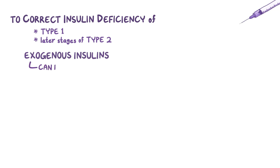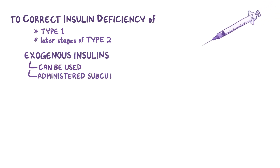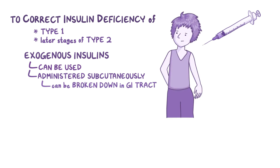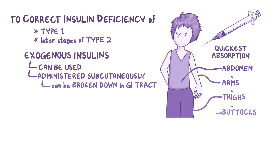In order to correct the insulin deficiency found in type 1 diabetes and later stages of type 2 diabetes, exogenous insulins can be used. Insulin is administered subcutaneously because they can be broken down in the GI tract. Insulin is typically administered through syringes or insulin pens. When injected into the abdominal region, the absorption is the quickest, followed by arms, thighs, and buttocks.